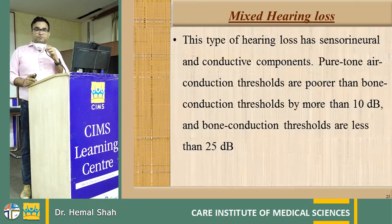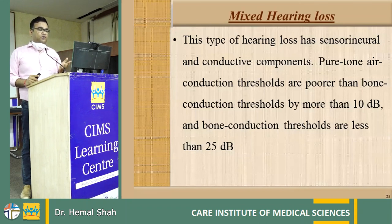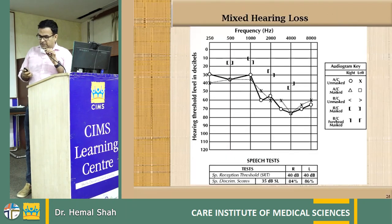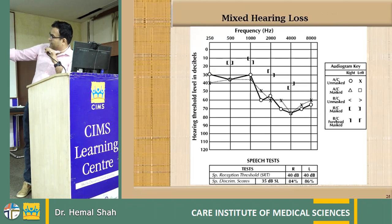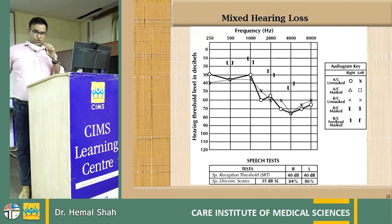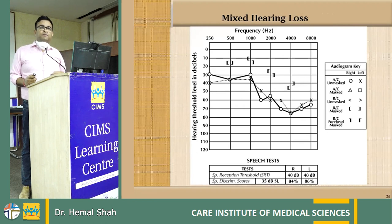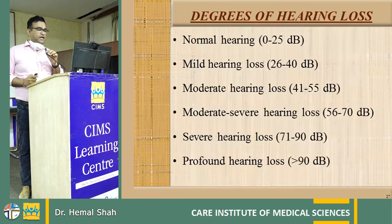Mixed hearing loss is a mixture of both sensorineural and conductive components. Air conduction thresholds are poorer than bone conduction thresholds by more than 10 dB, and bone conduction thresholds are elevated above 25 dB. On the audiogram you can see both a gap and a slope. This is typically seen in patients above 50–60 years old with a perforated eardrum, where both conductive and sensorineural hearing loss coexist.